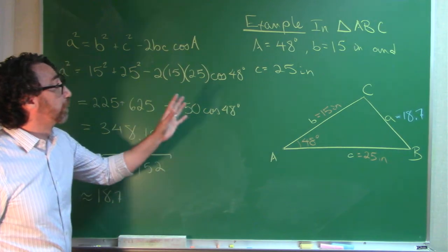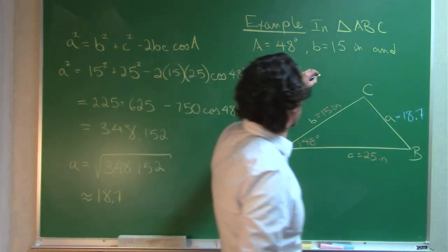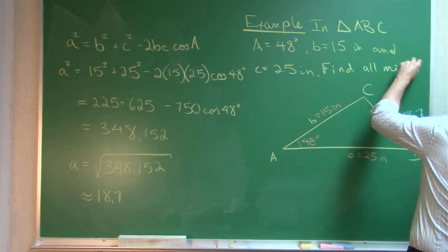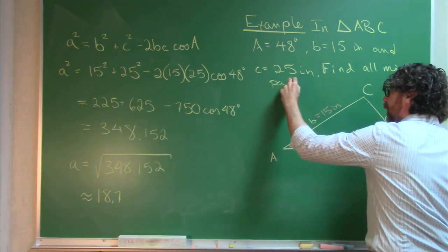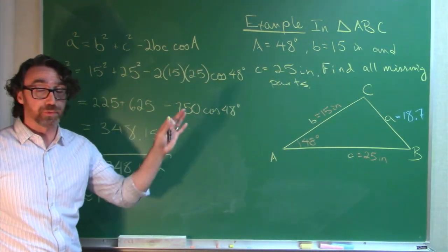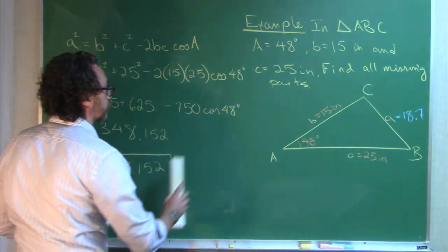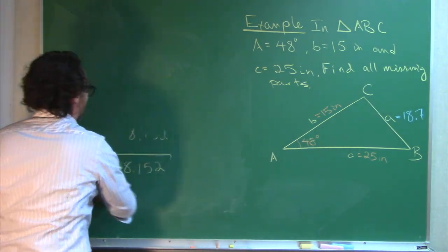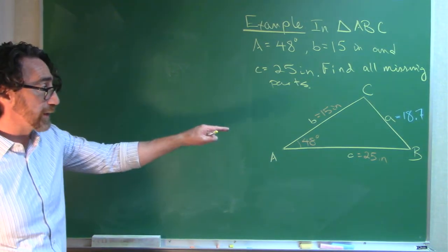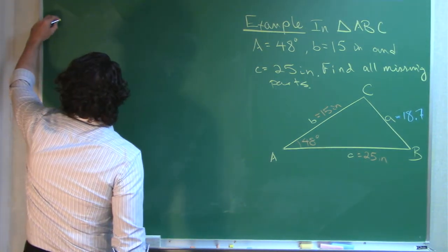I guess I forgot to write the directions here. Find all missing parts. So we found side A using the law of cosines. Now, we need to find the remaining two angles. Let me give myself a little bit of board space here. Now that I know the length of side A, I can use the law of sines to find one of the remaining angles.